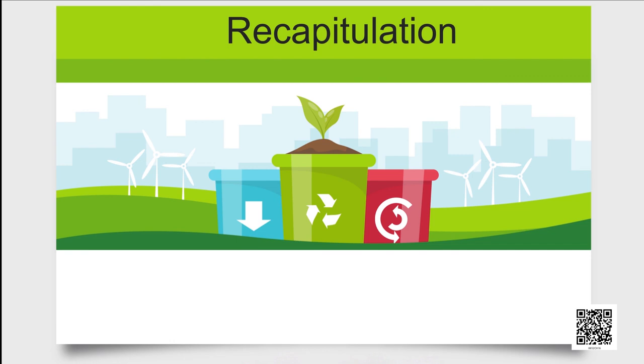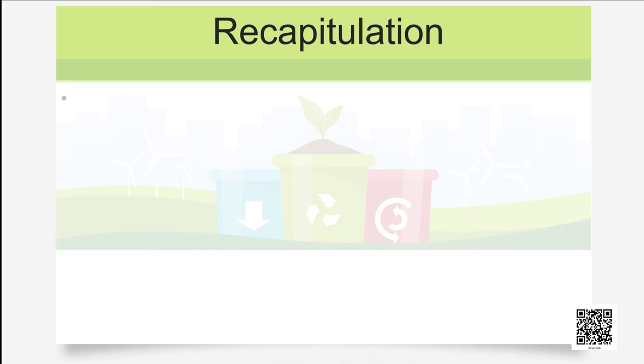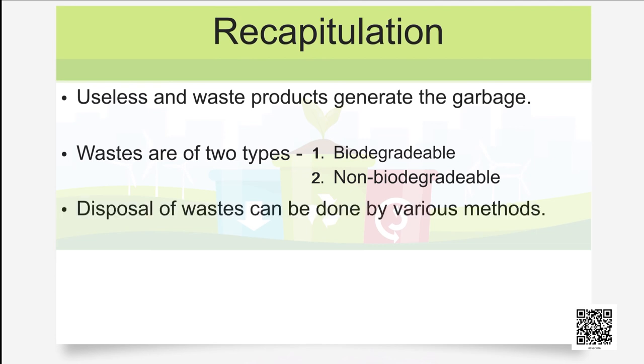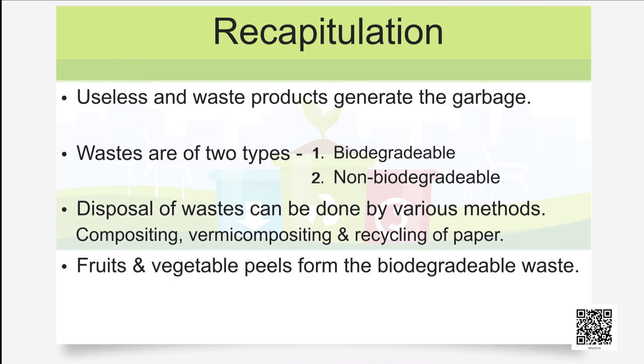Let us conclude our chapter with a quick revision. Today we have learnt that useless and waste products generate the garbage. Then we learnt waste or garbage is of two types, biodegradable and non-biodegradable. Next, we learnt disposal of waste can be done by various methods like composting, vermicomposting and recycling of paper. Fruit and vegetable peels form the biodegradable waste and can be used for making compost.